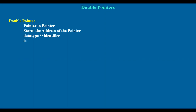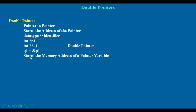Its data type is identified as double star identifier. You will see it clearly. A pointer is declared as integer star p1. A double pointer is declared as double star q1. Suppose p1 is the pointer — its address, ampersand p1, is stored in q1. Here q1 is the double pointer, so it stores the memory address of a pointer variable.